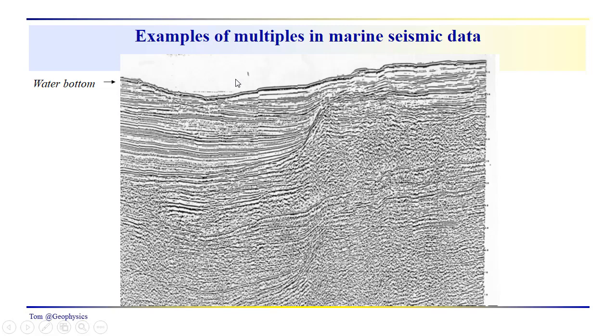So here's an example. This is a seismic display. We've got the water layer here. The upper part of the water column has been truncated, so it goes on up in time. And the question for you is, where is the water bottom multiple? Can you see a water bottom multiple?